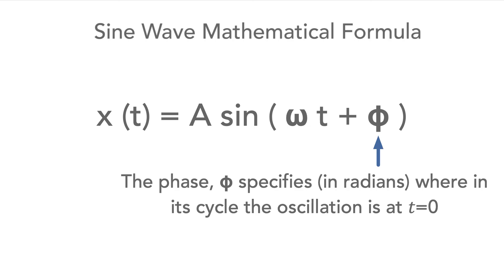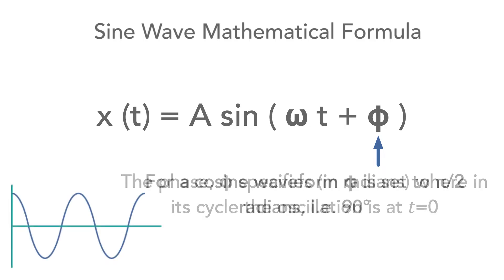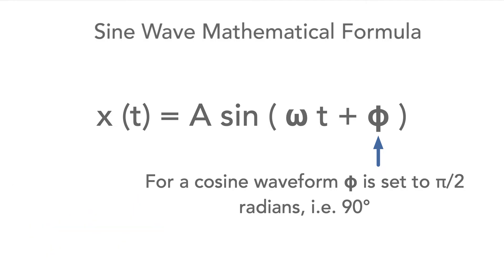The additional variable φ enables a phase difference to be accommodated. If the waveform starts at its peak as it does in the case of a cosine waveform, then this variable can be set to 90 degrees or π/2. It also allows other phase differences to be accommodated which are often needed in various electronic circuits.